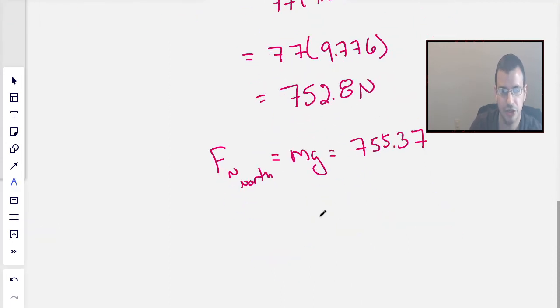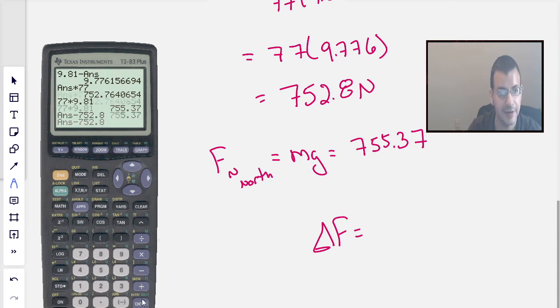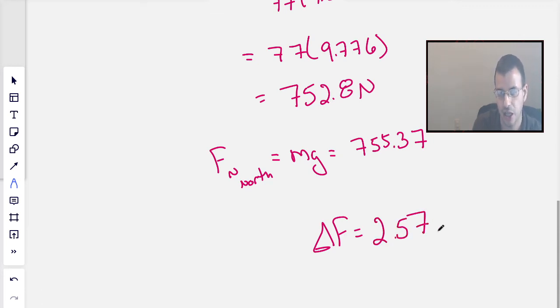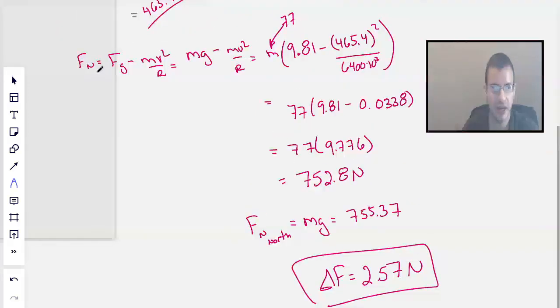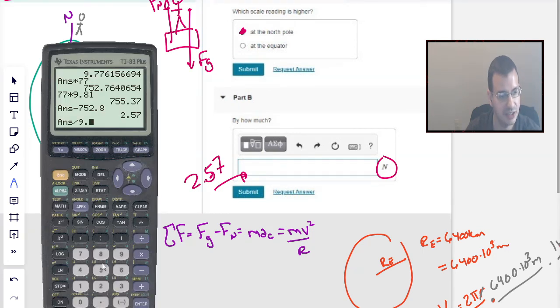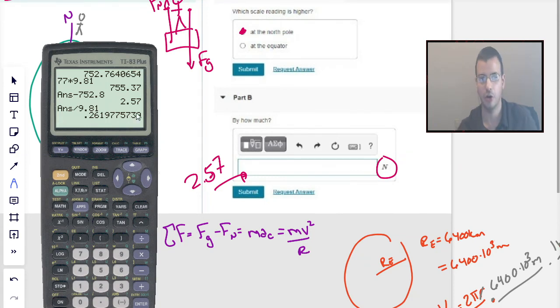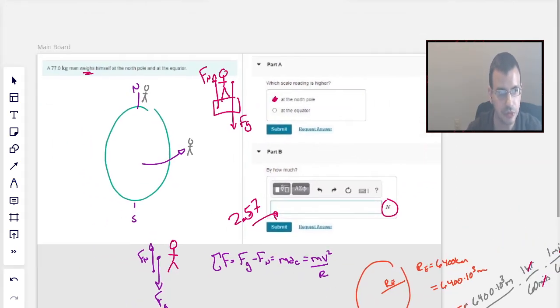And therefore, delta force, not the exciting action movie type delta force, just a difference in force, would be 755.37 minus 752.8, which is 2.57 newtons. So not a big difference, but a little bit of a difference. And probably not enough to be noticeable. So if you divide that by 2.57 newtons, divide it by 9.81, it's about a quarter kilo or half pound. So not a big difference, probably not even noticeable.